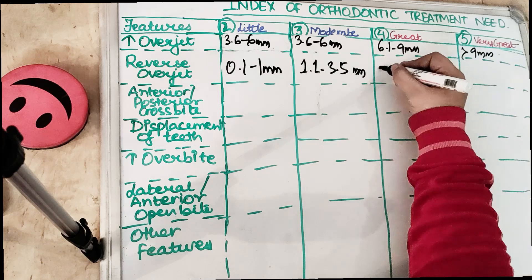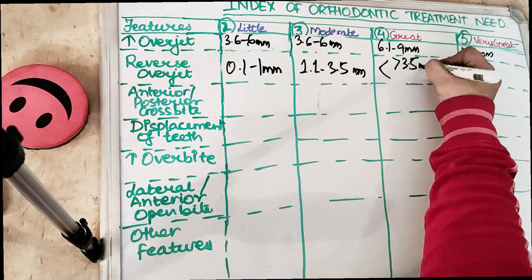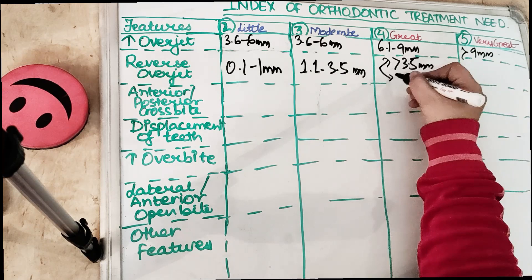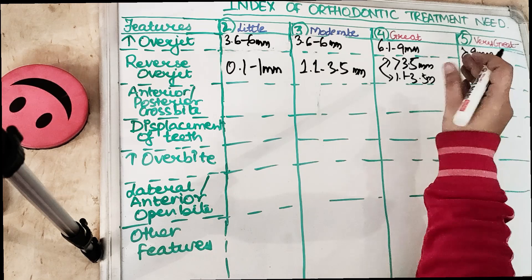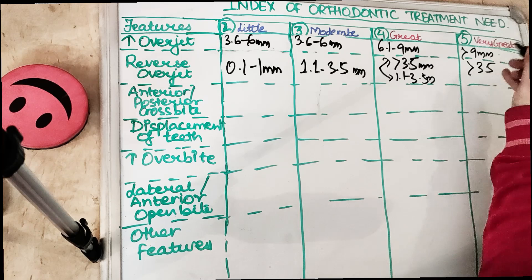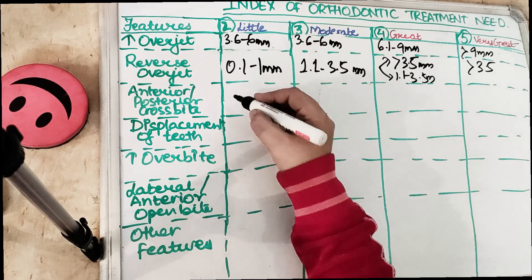For Grade 4 reverse overjet, there are two scenarios: one is more than 3.5 millimeters without masticatory or speech difficulty, and the other is 1.1 to 3.5 millimeters with speech and masticatory difficulty. Grade 5 is more than 3.5 millimeters with masticatory and speech difficulty.